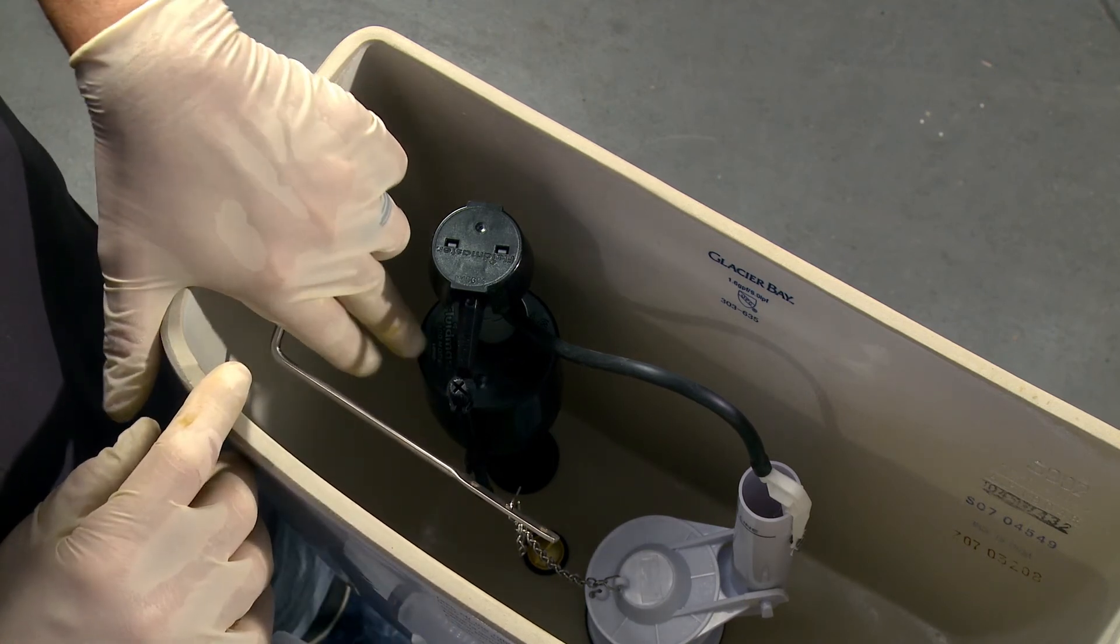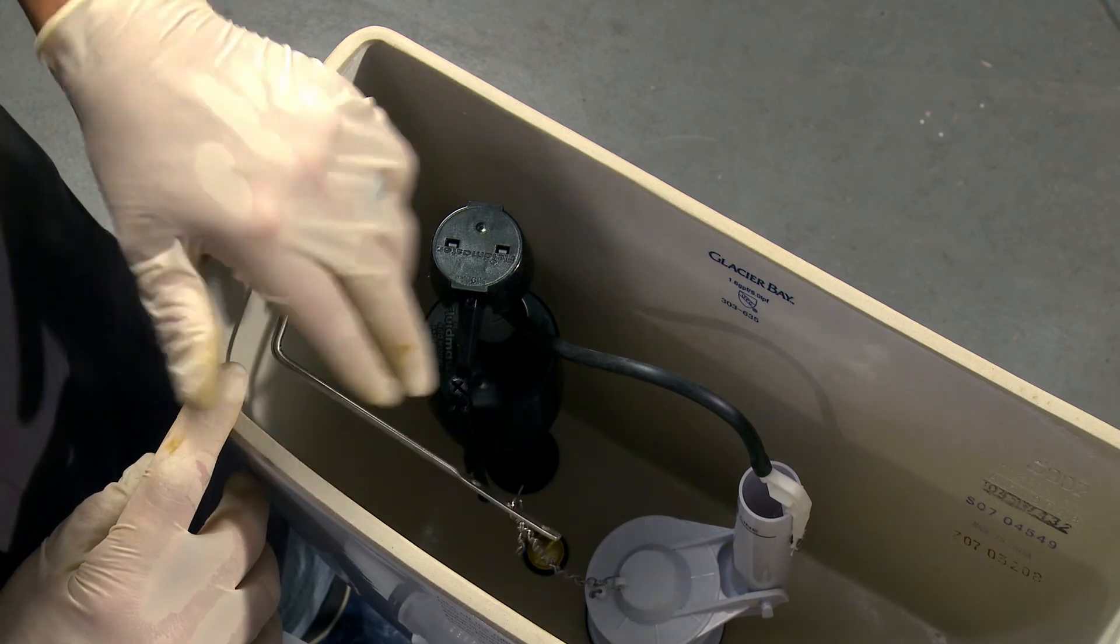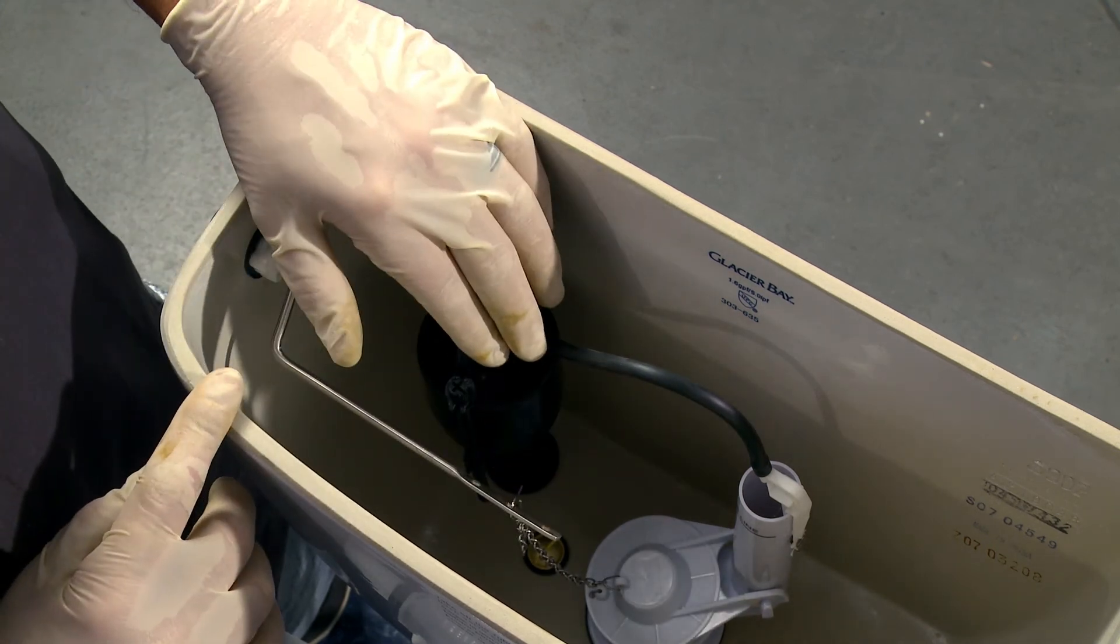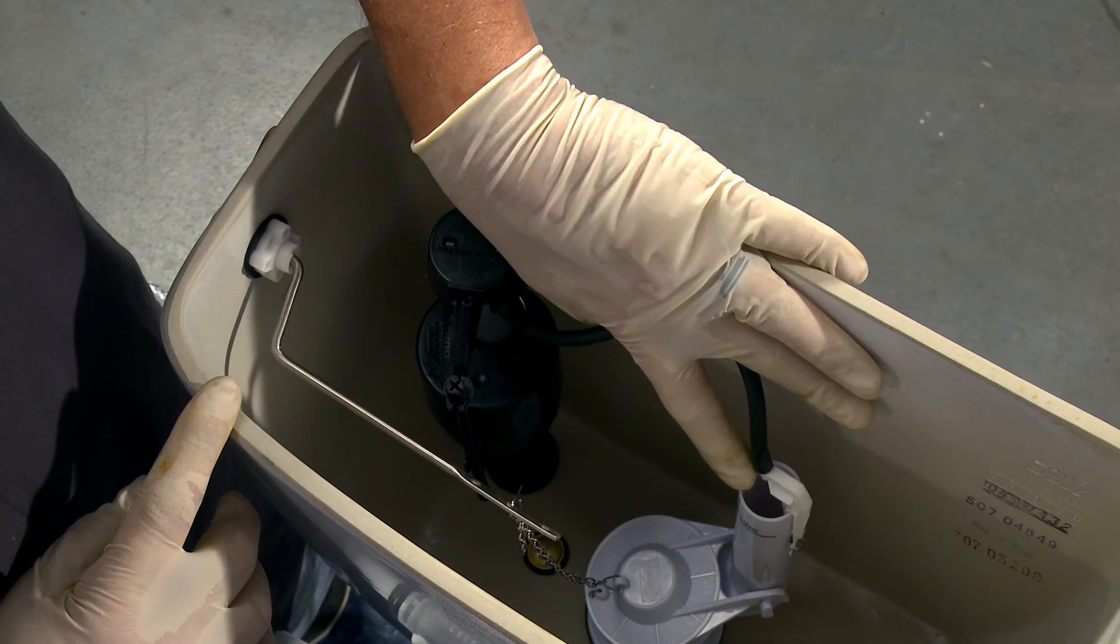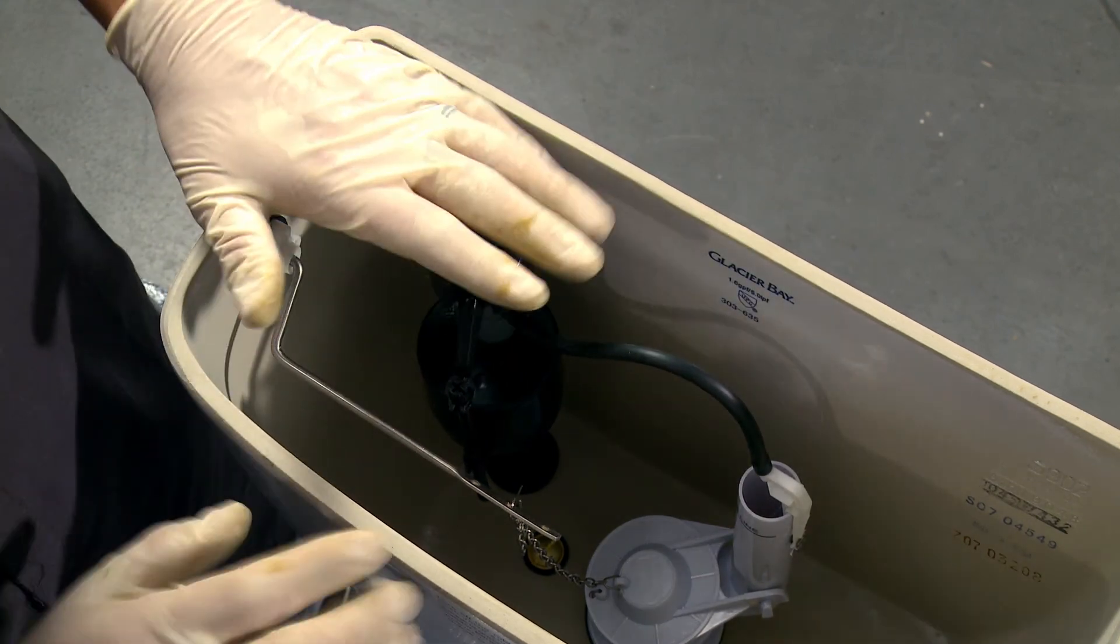And using a Phillips head screwdriver, you can adjust where the float sits when it's completely closed to get that water line zeroed in perfectly. Make sure the water is coming out of this area also to fill the bowl. And once it's operating properly,